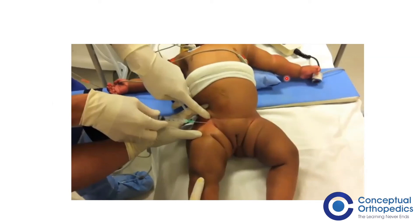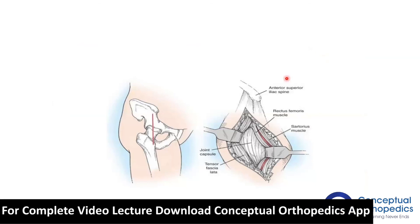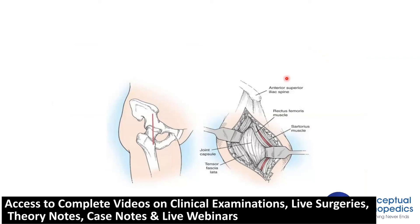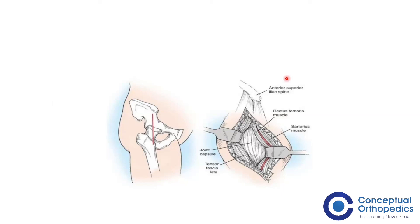A borderline candidate might say they'll wait for ultrasound, but there is enough criteria to proceed with washout. We ask the candidate which approach they would use. The standard expected answer is the Smith-Petersen approach, though an anterolateral approach is also acceptable. They should describe the superficial and deep layers: Sartorius, tensor fasciae latae, and the deep layer involving rectus femoris and gluteus medius. This is not the same extensile approach used for hip replacement — it's a much smaller version; normally you don't need to reflect or cut the rectus.